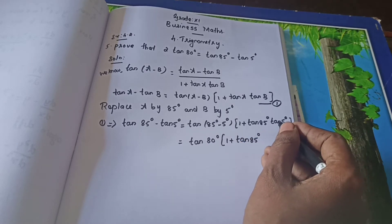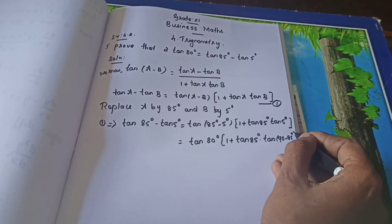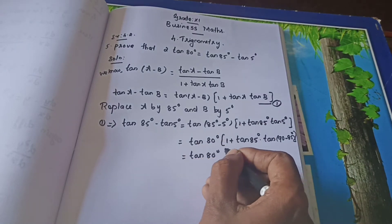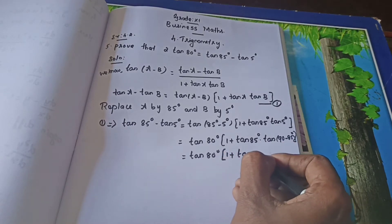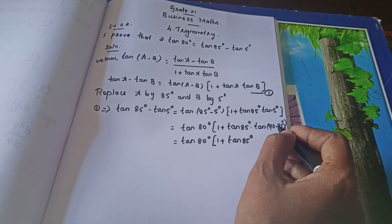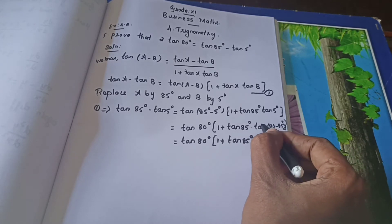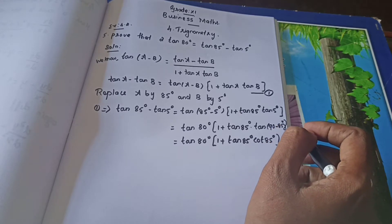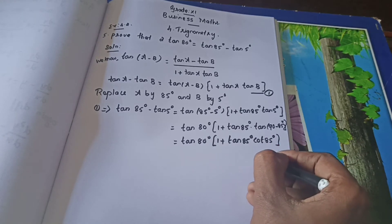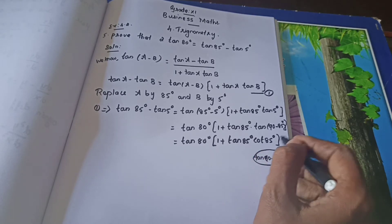Shall I write this as 90 minus theta? How will you write it in the form of 90 minus theta? 90 minus 85 is 5 degrees. So that's equal to tan 80° into 1 plus tan 85° tan 5°. Now students, what is tan(90 - θ)? Tan(90 - θ) equals cot θ. So tan 5° equals cot 85°. So if you write it in the form of tan(90 - θ) equals cot θ, you substitute this here. That equals tan 80° into 1 plus tan 85° into cot 85°.